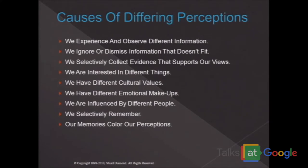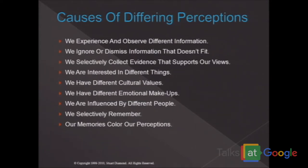So every time you have a disagreement with somebody, you need to check your perceptions and theirs. This is an even much more serious problem than that. I'm sure you've all seen this picture — I'm not going to go through all the details for time — but there are two figures in this picture: a young woman to the left of the picture and an old woman, which is sort of the whole picture. One's mouth is the other's necklace, one's nose is the other's chin, and so forth.